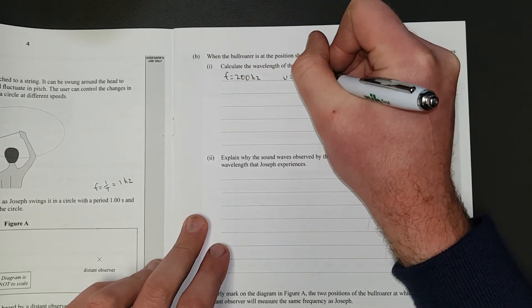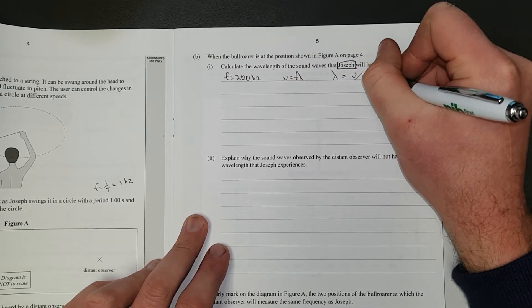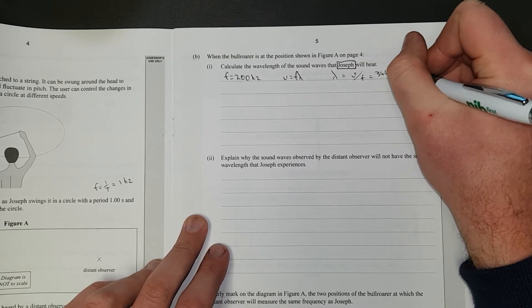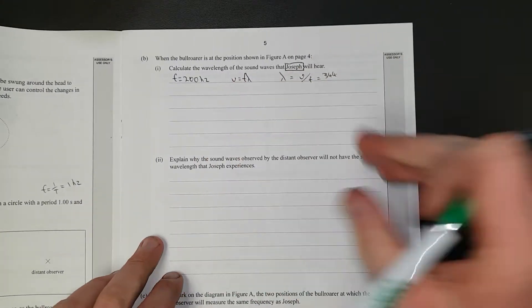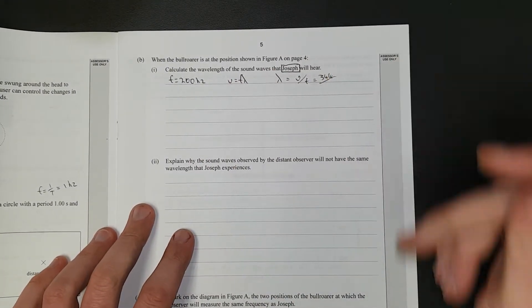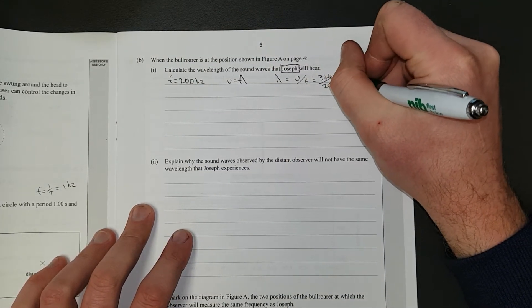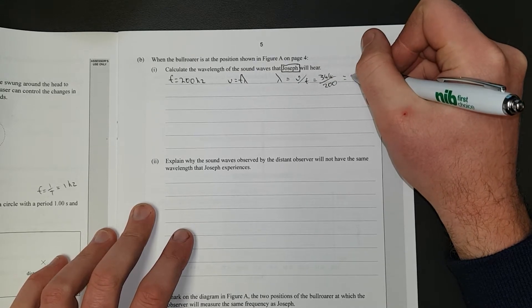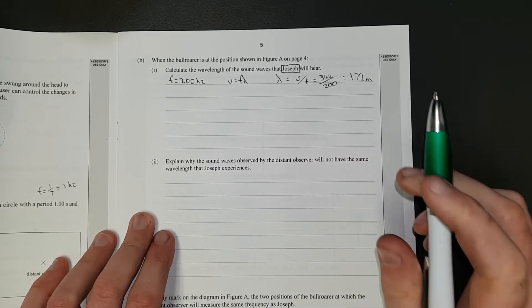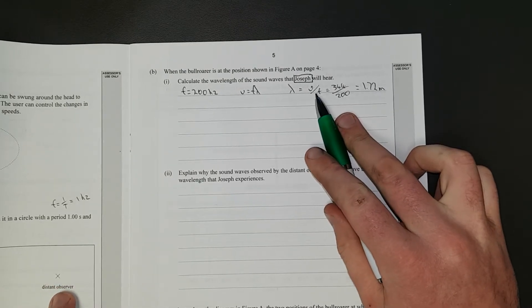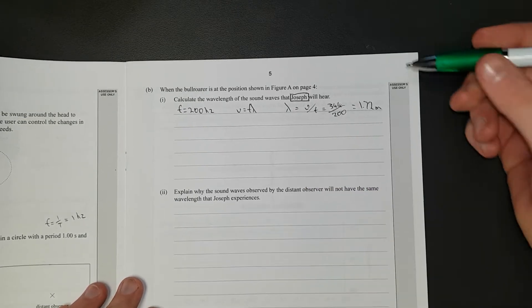We're trying to find the wavelength. V equals F lambda. In other words, the wavelength is equal to V over F, which is equal to 344 divided by 200 equals 1.72 meters. You've got to use the numbers they give you. If you try and use 343 because you've memorized it, tough luck. I got that wrong when I originally did this. I assumed it was the observer and I did a Doppler shifted calculation to find the wavelength, and it was actually way simpler than I thought.